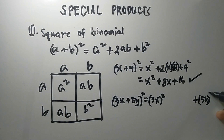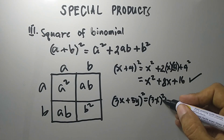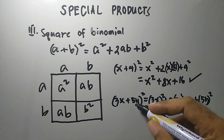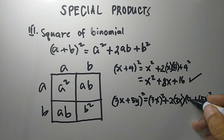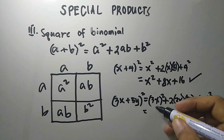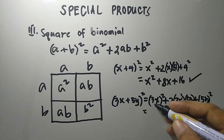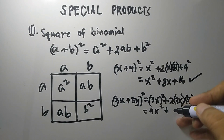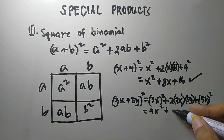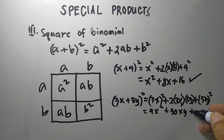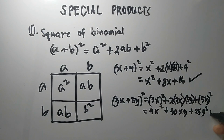For the middle term, we get twice the product of the first term, which is 3x, and the last term, which is 5y. So the answer: the square of 3x is 9x squared. Plus, 2 times 3 times 5 is 30, bring down x and y, giving 30xy. And the square of 5 is 25, the square of y is y squared, so we get 25y squared. Our product is 9x squared plus 30xy plus 25y squared.